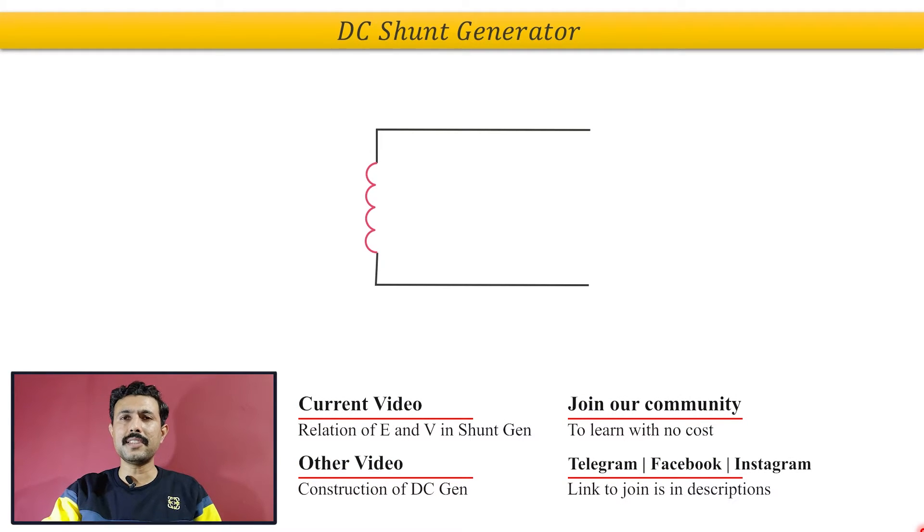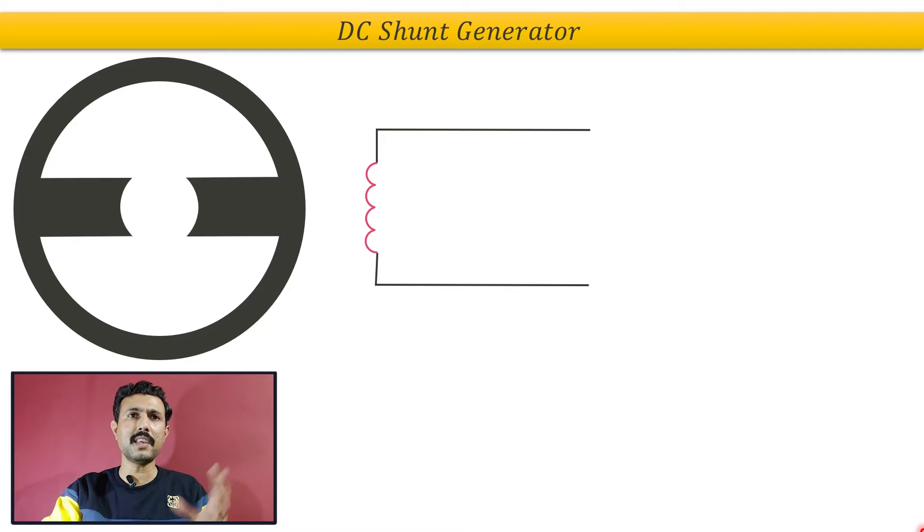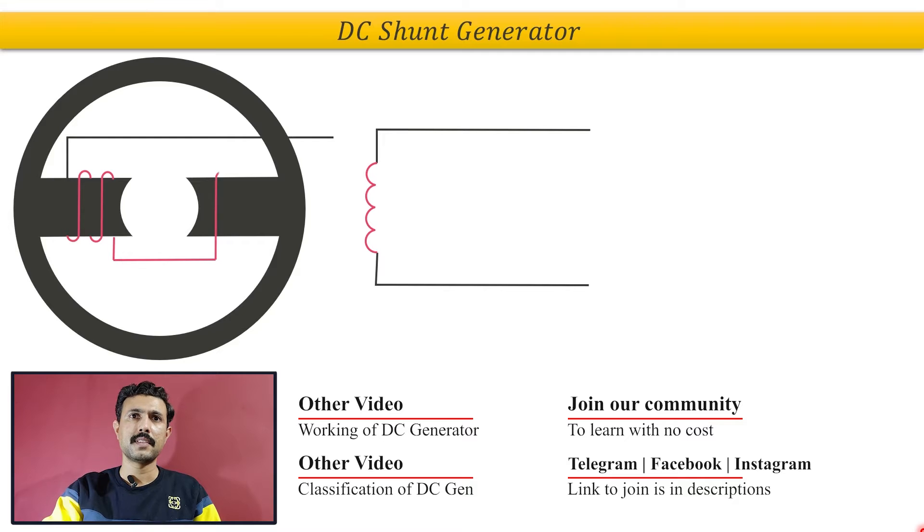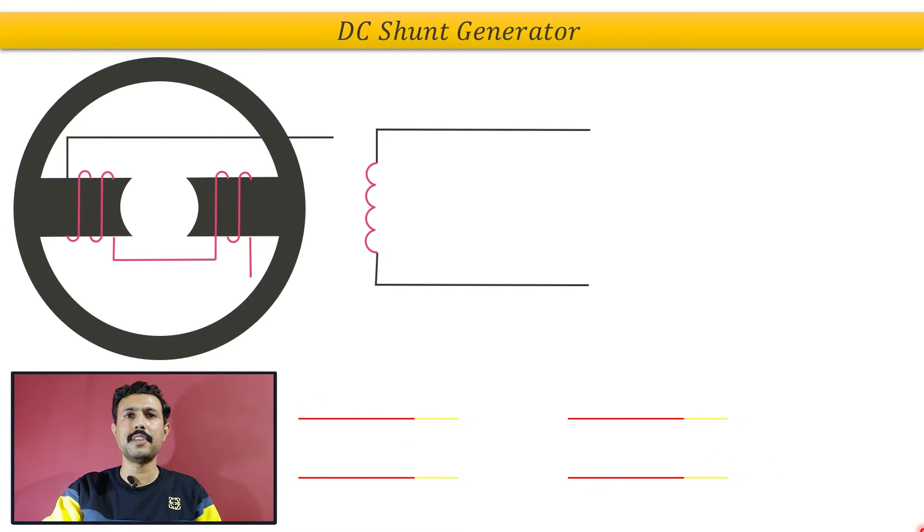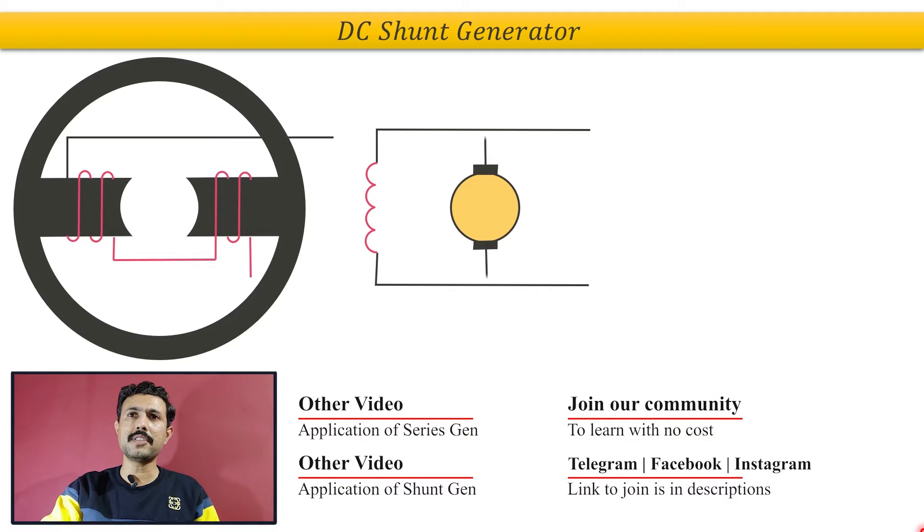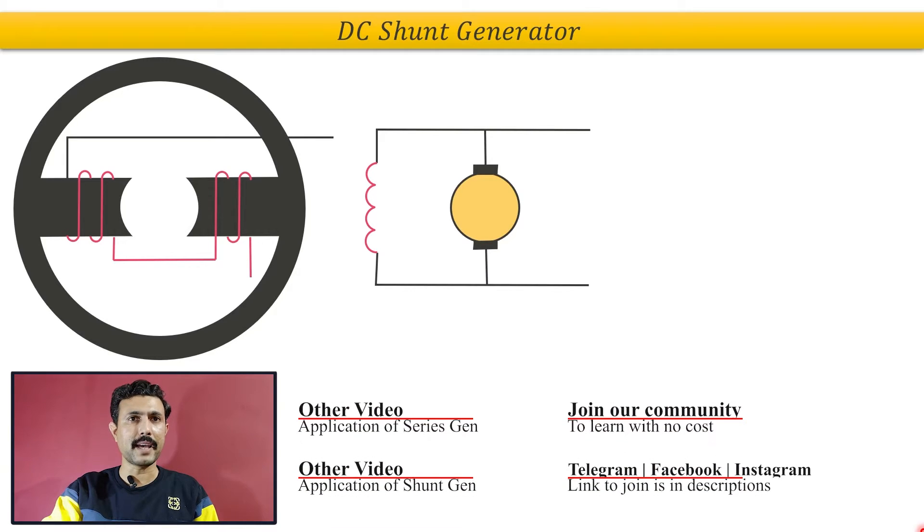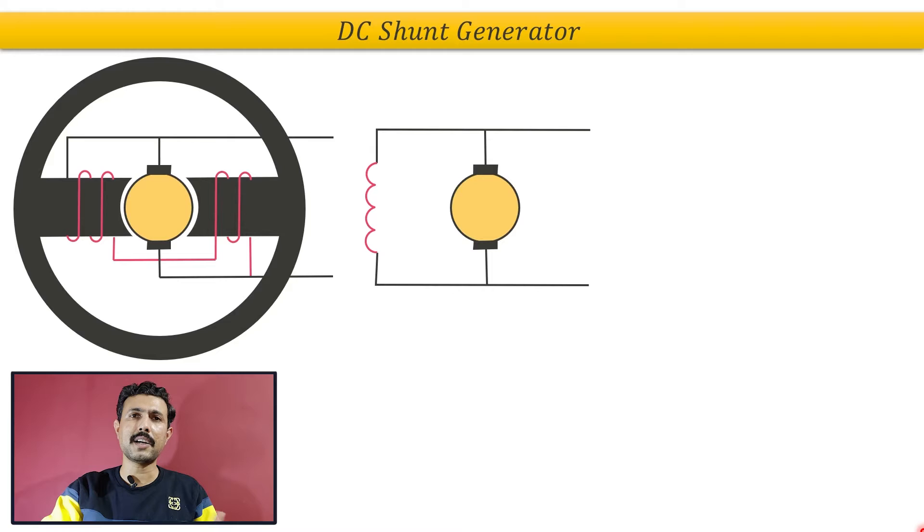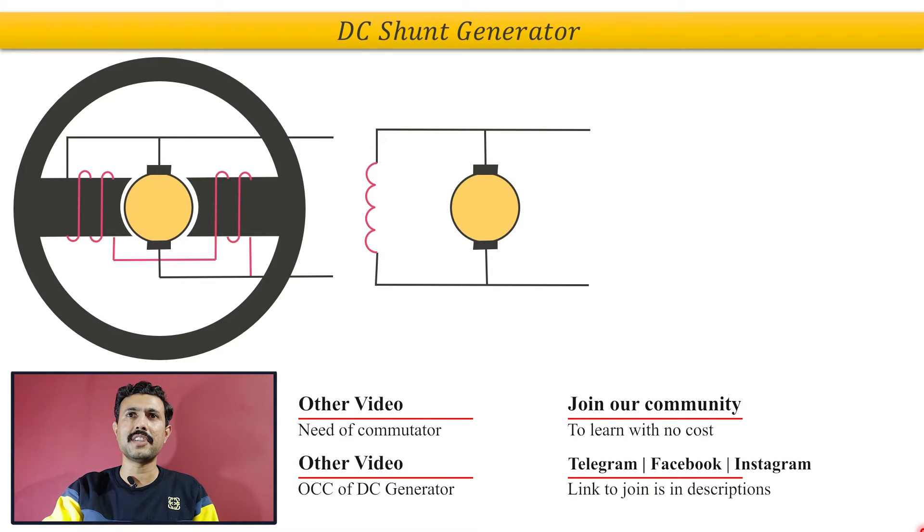So this is the shunt field winding and the same thing you can observe in our cross-sectional view. So this is how a shunt field winding is done. With this, the armature winding is connected in parallel and this is how it is connected in DC shunt generator.